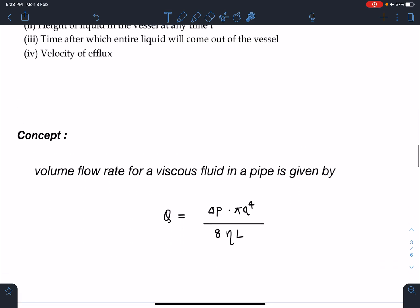Anyways, here the concept part is: volume flow rate for a viscous fluid in a pipe is given by Q = (ΔP × π r⁴)/(8ηL), where ΔP is the pressure difference across the tube, r is the radius of the tube, η is the viscosity, and L is the length. This is Poiseuille's equation.